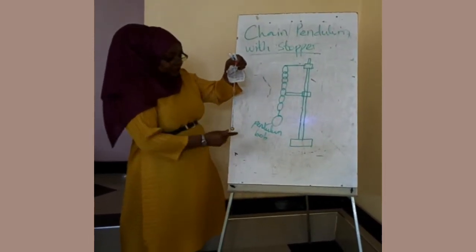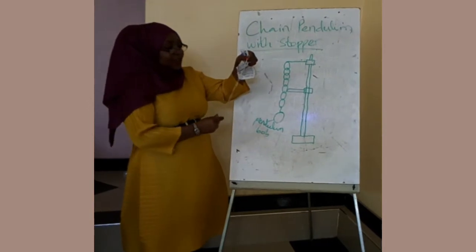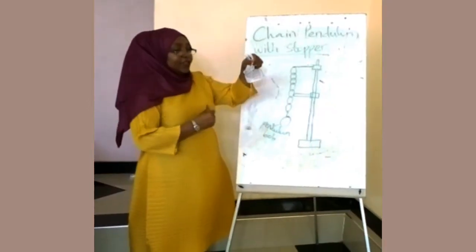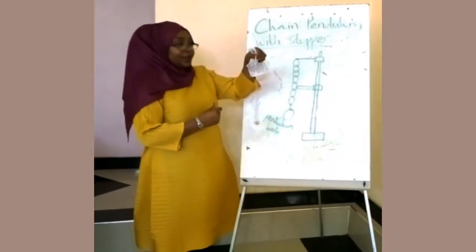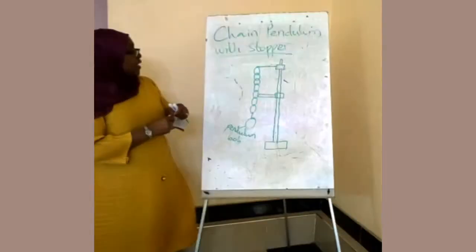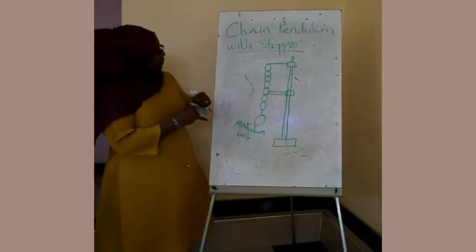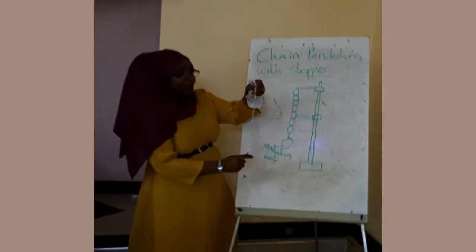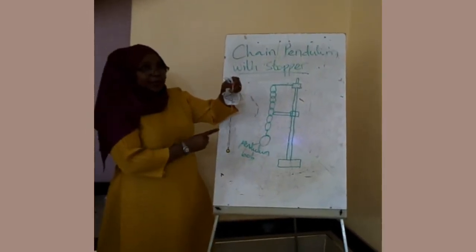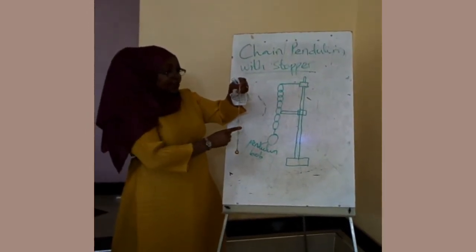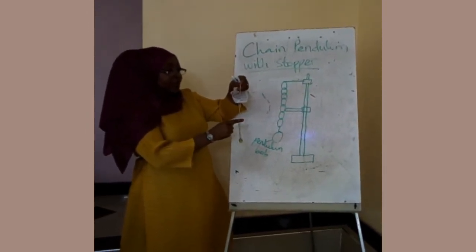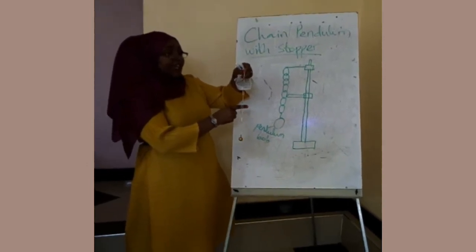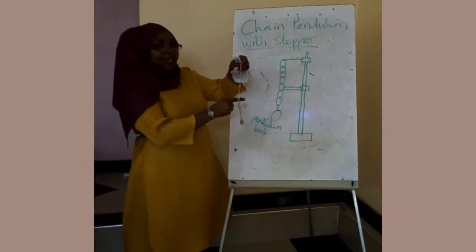It is suspended to a small angle, then released. It is moving to and fro. In this case, the pendulum is moving perpendicular to the stopper. So it can stop for some time, then it starts moving again.